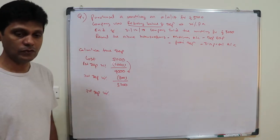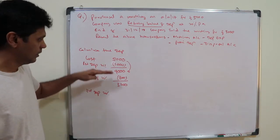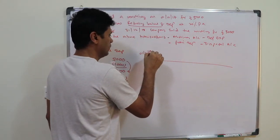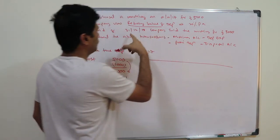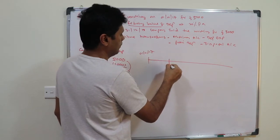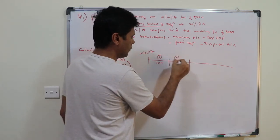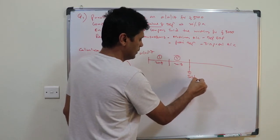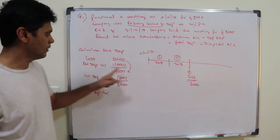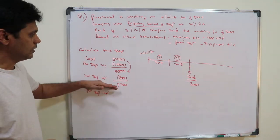For the third year, depreciation would be 20 percent on three thousand two hundred, but we don't need to continue further. The machinery was purchased on 1st January 2017 and sold on 31st December 2018, so we need exactly two years of depreciation: one thousand for 2017 and eight hundred for 2018.